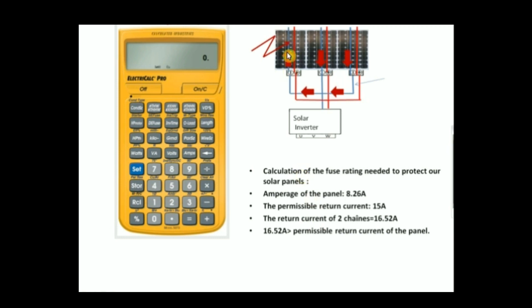And as you know, the permissible return current of the panel is 15 amps, so 16.52 amps is higher than the permissible return current of the panel. So this panel or this chain will be destroyed because we didn't provide a fuse for the protection.